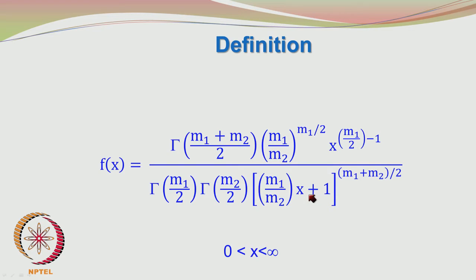Another important thing to note is that the independent variable x appears twice — once in the numerator and once in the denominator — and it can take only positive values. The Fisher distribution describes the ratios of two variances. The variances themselves are positive quantities, so x takes only positive values ranging from 0 to infinity.